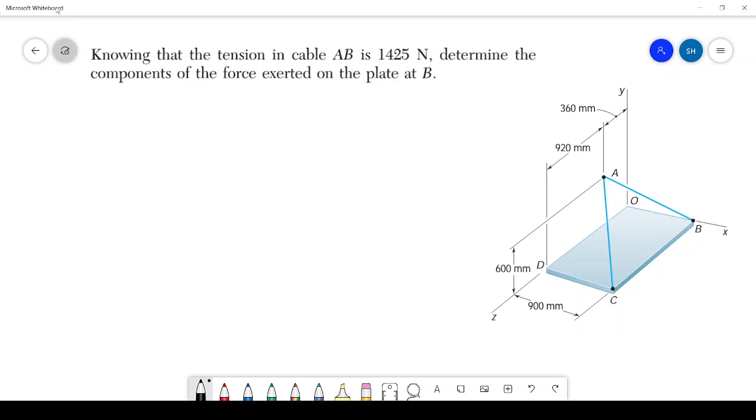So first thing we will do is to find out the BA vector. BA will be equal to position vector of A minus position vector of B.